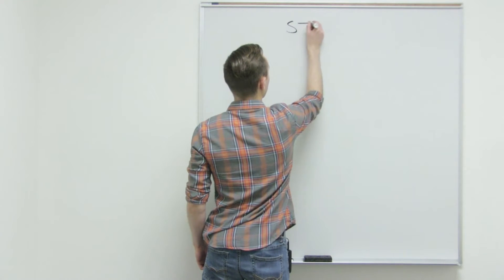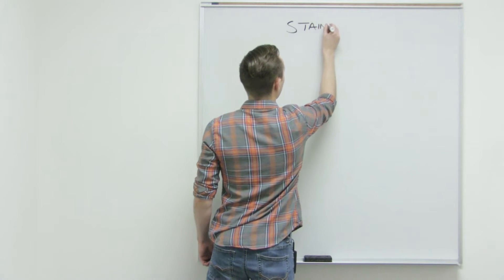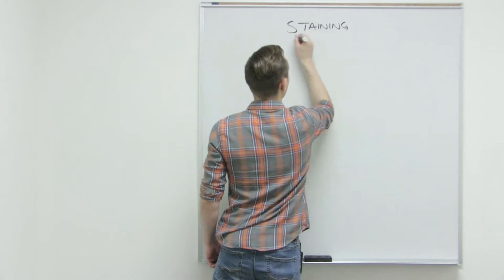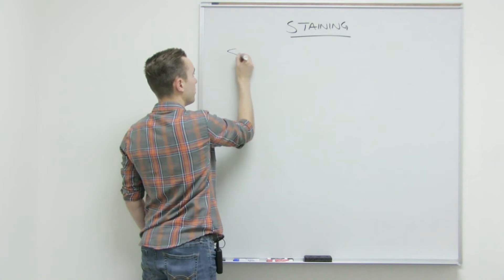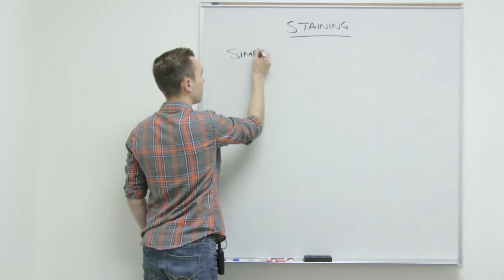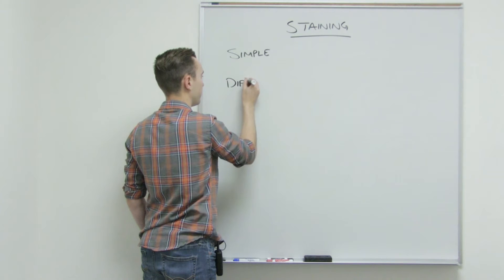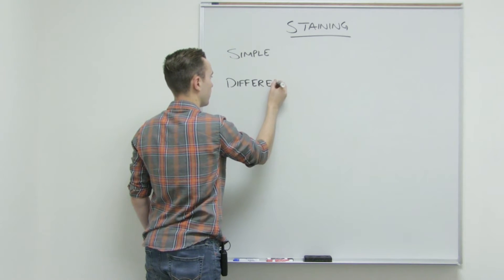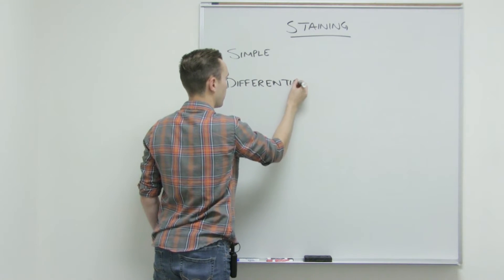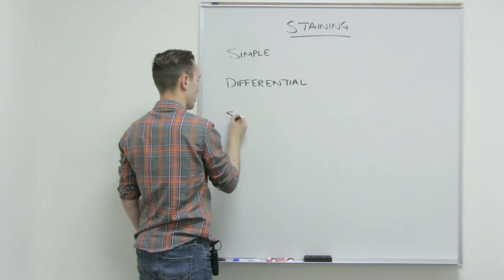So beginning with staining, there are three different types of stains. There's a simple stain, a differential stain, and a special stain.